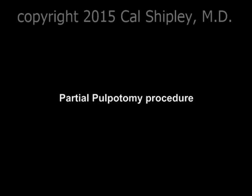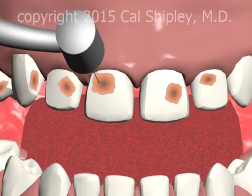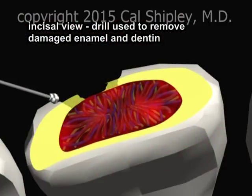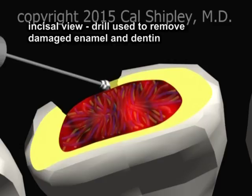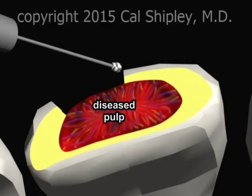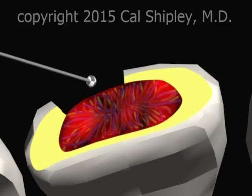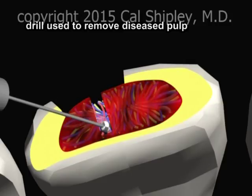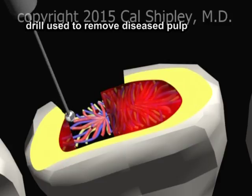Now let's take a look at the partial pulpotomy procedure. Again, we'll focus on tooth E. After administration of a local anesthetic, a drill is used to remove the damaged portions of enamel and dentin from the tooth. This exposes the diseased portion of the pulp. A drill is then used to remove the diseased pulp. The diseased pulp may also be removed by electrocautery or laser-based techniques.